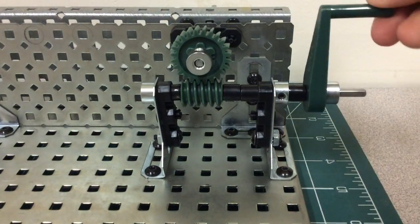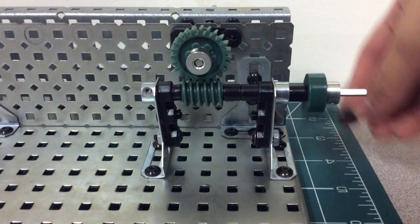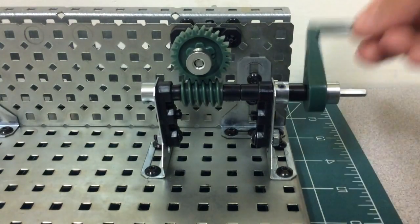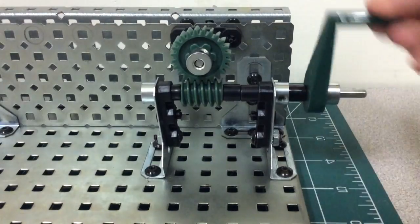The gear ratio for the worm and wheel is 24 over 1. And the real life examples are tuning guitars using a worm and wheel.